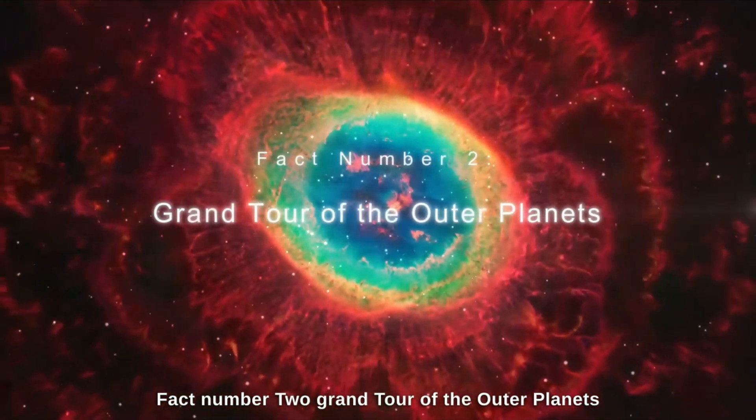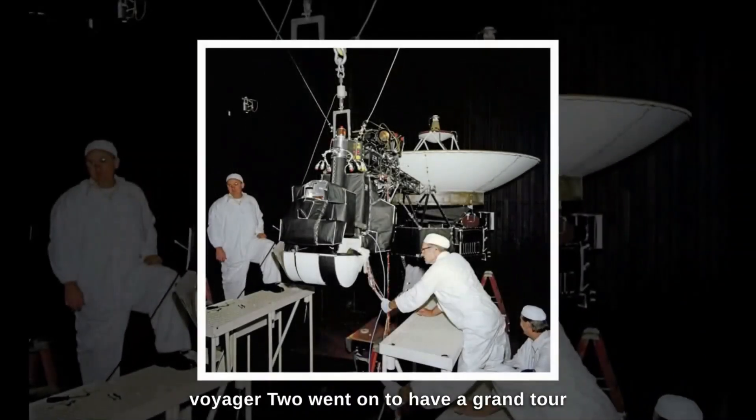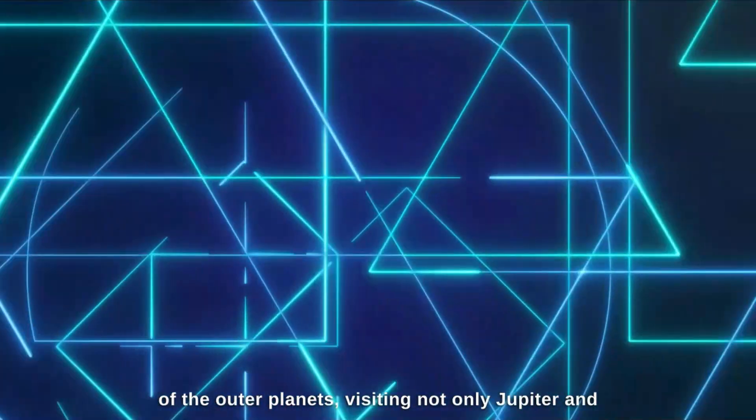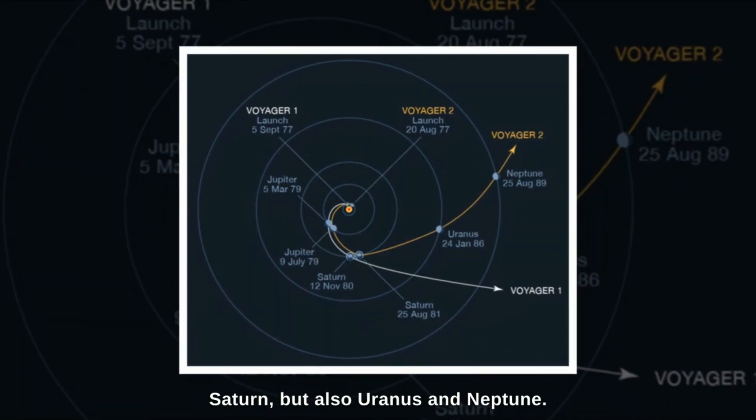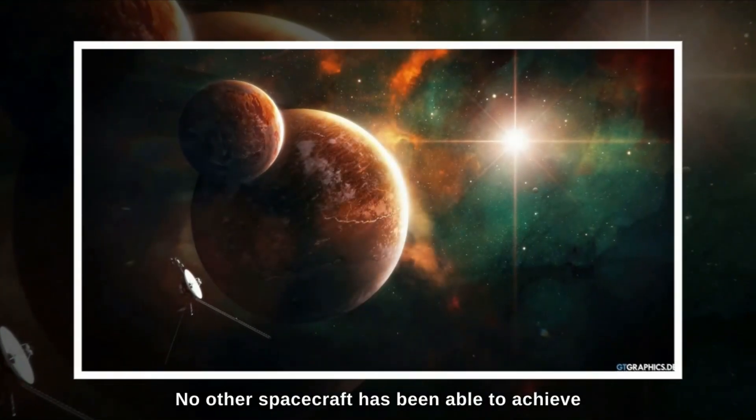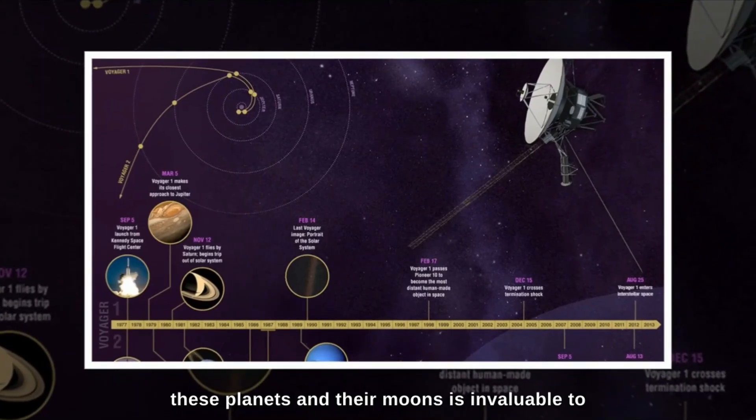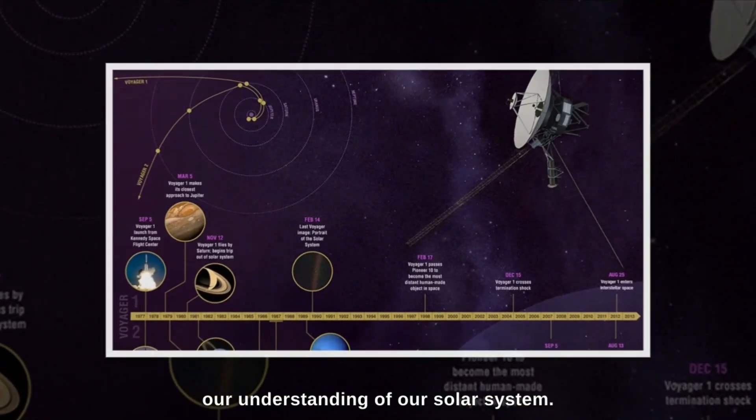Fact number 2. Grand Tour of the Outer Planets. Voyager 2 went on to have a grand tour of the outer planets, visiting not only Jupiter and Saturn, but also Uranus and Neptune. No other spacecraft has been able to achieve this feat, and the data they collected about these planets and their moons is invaluable to our understanding of our solar system.